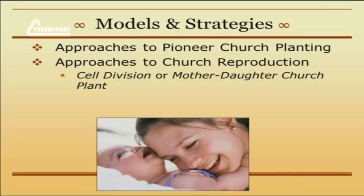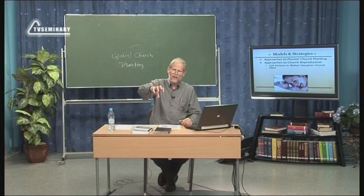The most common is simply what we sometimes call cell division or the mother-daughter church plant. In other words, you have an existing church — maybe 150 members — and they choose to say maybe there are 20 members that live in this part of the city, and we will send out those members.